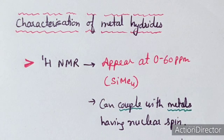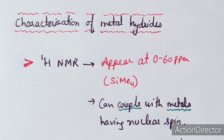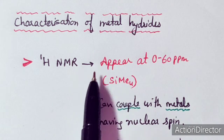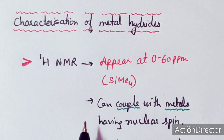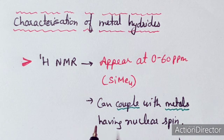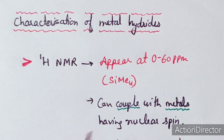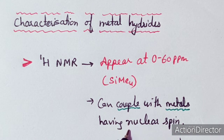There are various methods to characterize metal hydrides. The first is ¹H NMR spectroscopy. In ¹H NMR, the peak appears at 0 to −60 ppm relative to TMS. The hydrogen in the metal hydride can couple with the metal — if it has nuclear spin — or with other ligands such as phosphines, giving characteristic peaks.